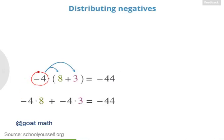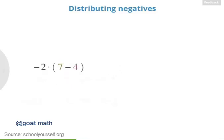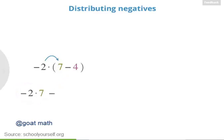You just confirmed that the distributive law still works even when you're distributing a negative number. Notice that you're adding a negative over here, which is the same as subtracting. So by distributing a negative number, we turned this addition into subtraction. Let's see what happens when we distribute a negative number onto subtraction. Suppose you have negative 2 times 7 minus 4 in parentheses. We can distribute the negative 2, giving us negative 2 times 7, and then we're subtracting, and the second term is negative 2 times 4.